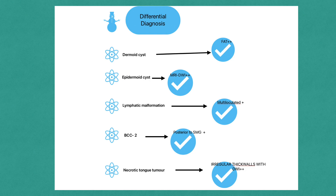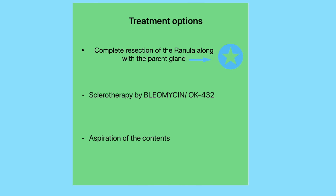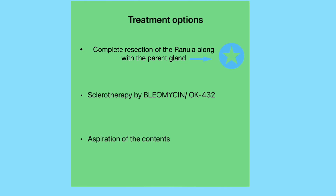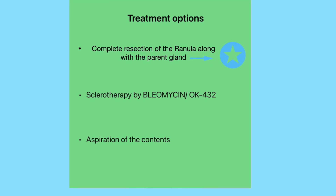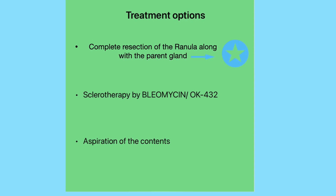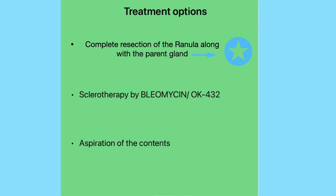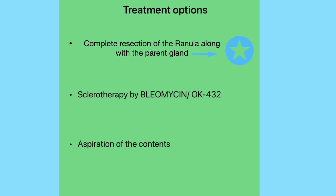Regarding treatment options for ranula, the most effective is complete resection of the ranula along with the obstructed sublingual gland, which prevents recurrence. The second option is sclerotherapy, using agents such as bleomycin or OK-432. A third, less common option now largely abandoned is cyst aspiration, which is no longer used because of its high recurrence rate.